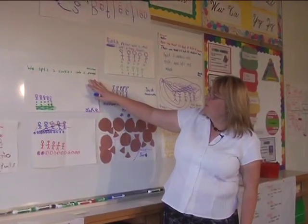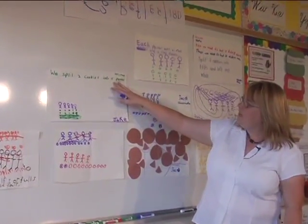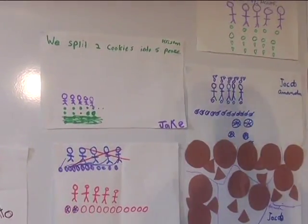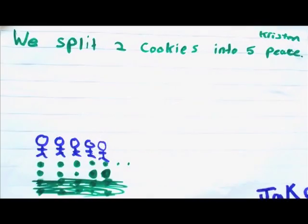Kristen and Jake said we split 2 cookies into 5 pieces. Kristen and Jake, can you explain your thinking there? We tried to give everybody the same amount of cookies, but we figured out we needed 3 more, so we tried to split it so everybody would get 5 little pieces, or 2 extra 2 little pieces. So that's what we came up with.